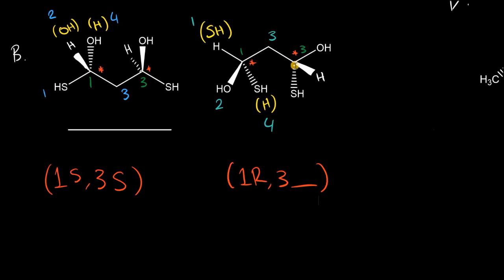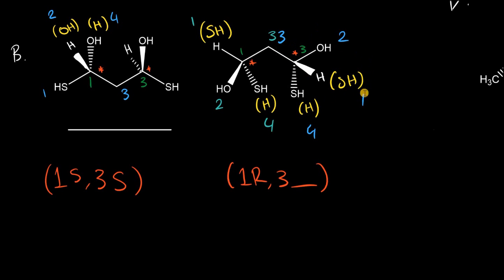At carbon 3, the sulfhydryl is projecting towards the back and the hydrogen is projecting out front. Again, the first step is to force the hydrogen into the back and bring out whatever group was there. Using the same prioritization as before — sulfhydryl first, OH second, this carbon third — drawing the arrow from 1 to 2 to 3 looks counterclockwise but it's really R. Since the stereochemistry is the total opposite at all chiral centers — 1S,3S versus 1R,3R — these two compounds are enantiomers.